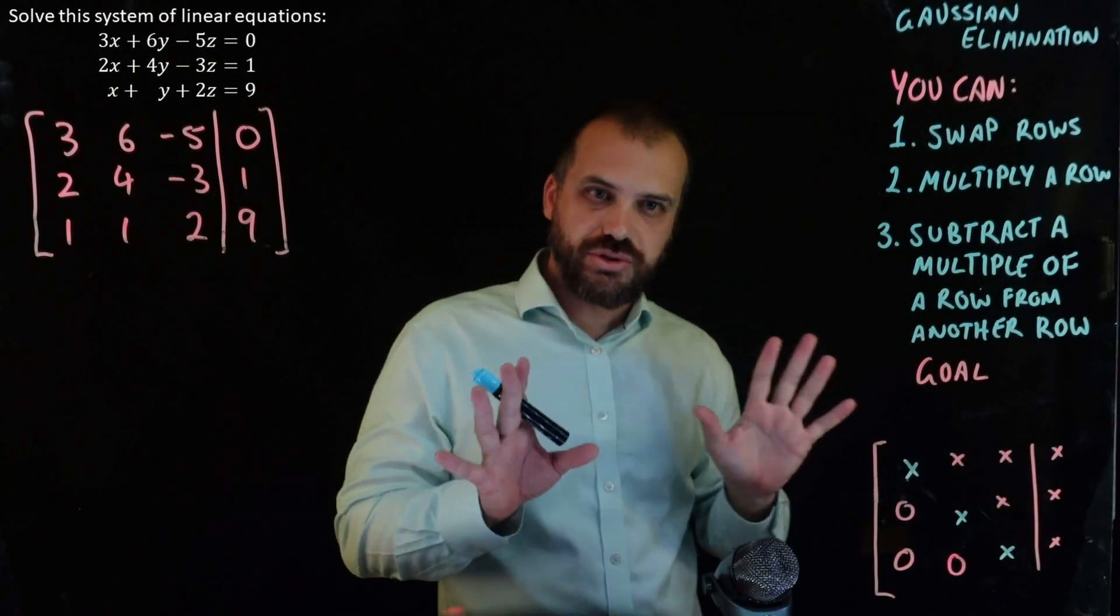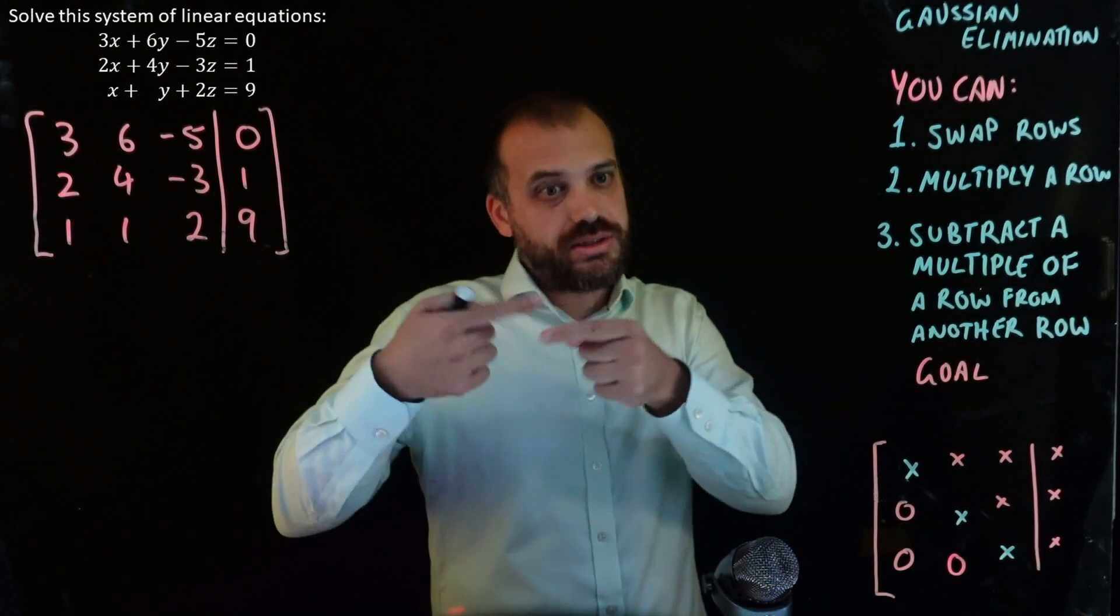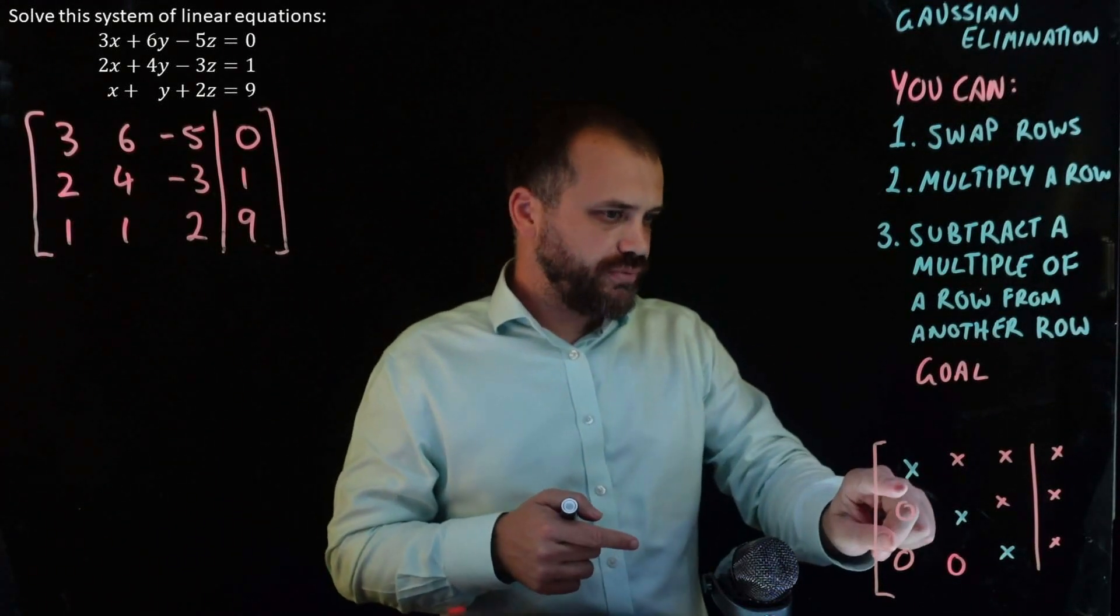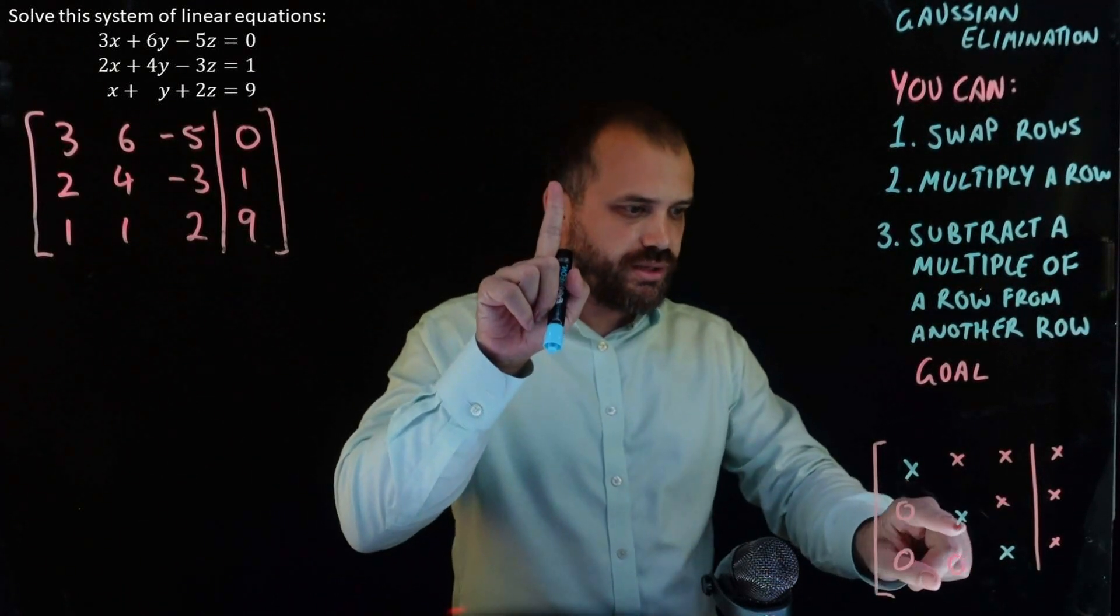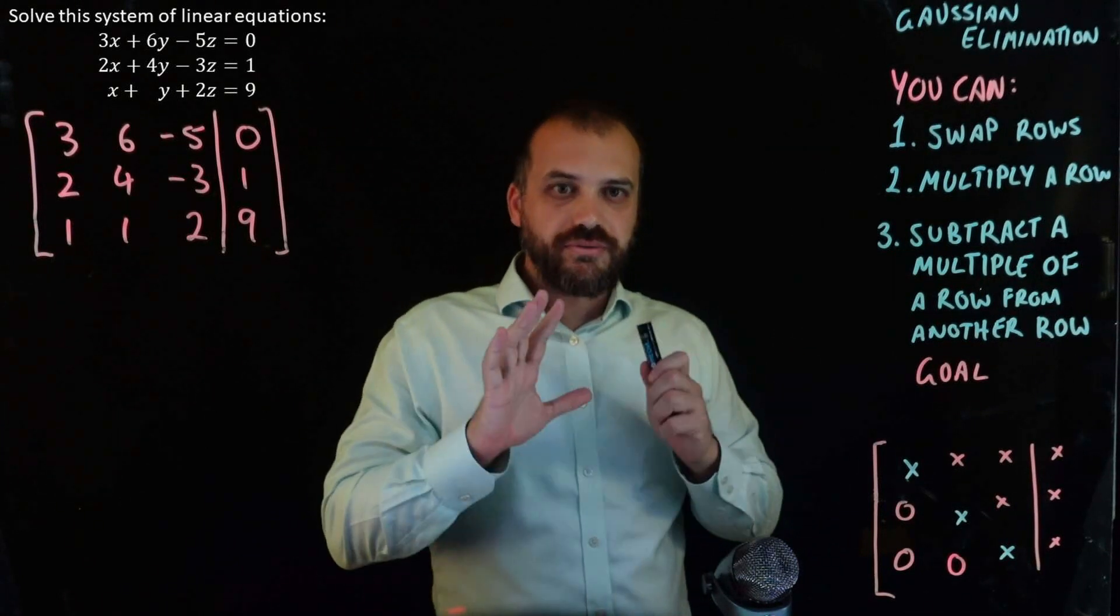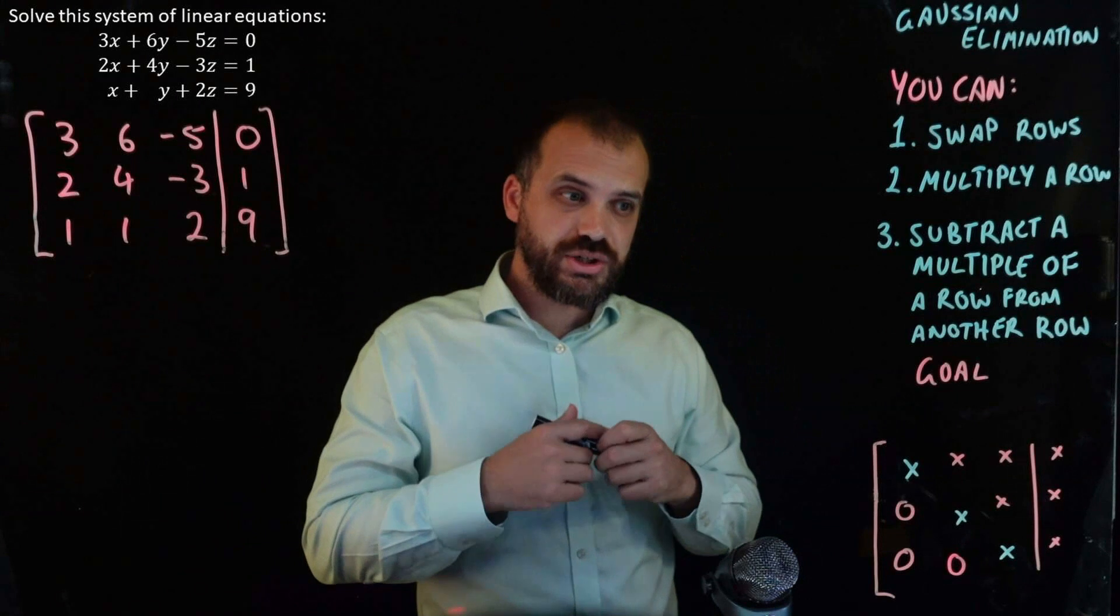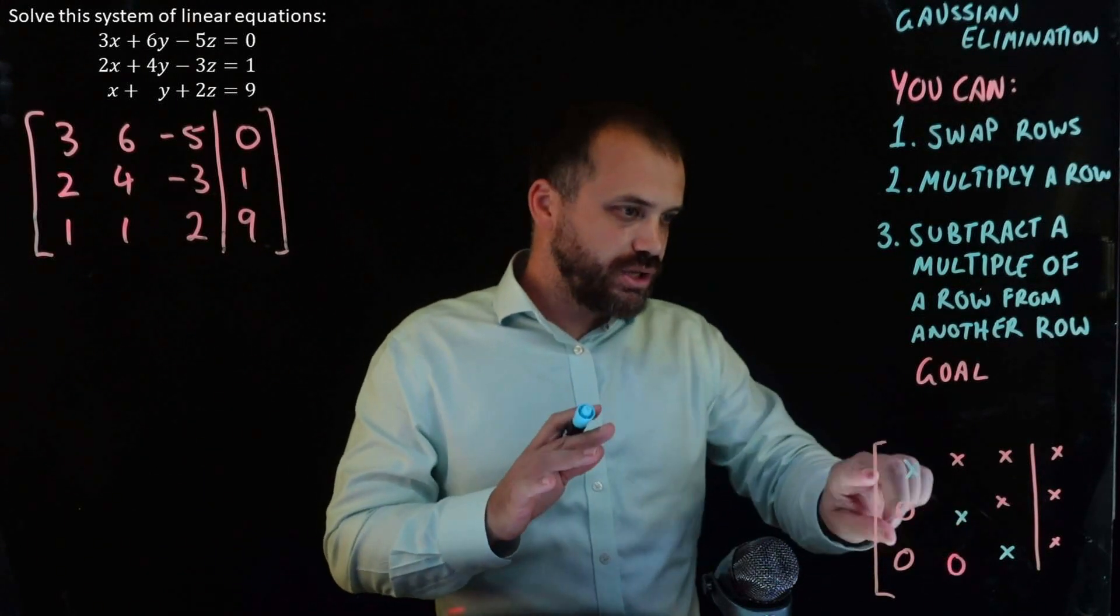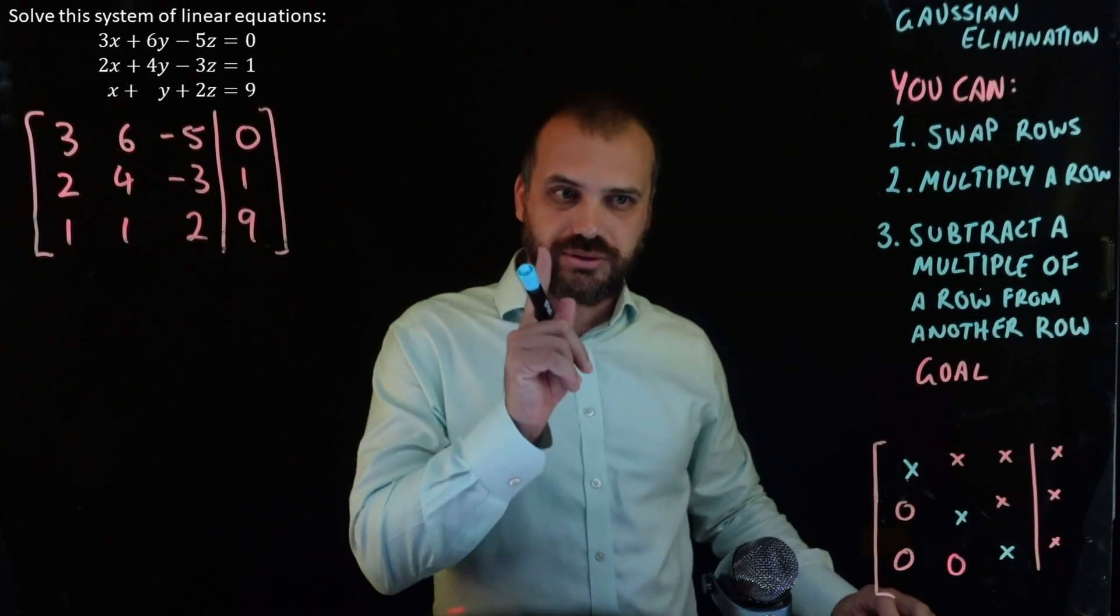And all of these x's just represent numbers. Now some people think the goal is one step further, and for all of these blue bits here to be the number one. One, one, one. That's called row echelon form. But for the purpose of what we're trying to do, solve that system of equations, we don't need them to all be ones. So just numbers and zeros below the leading diagonal. That's the goal.